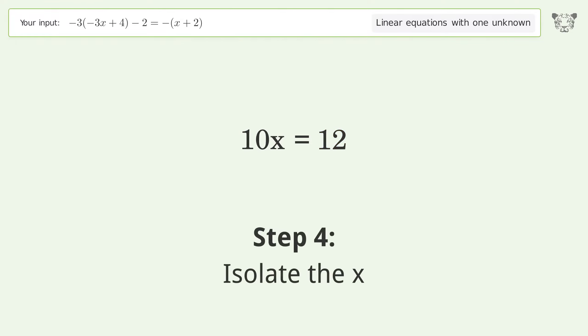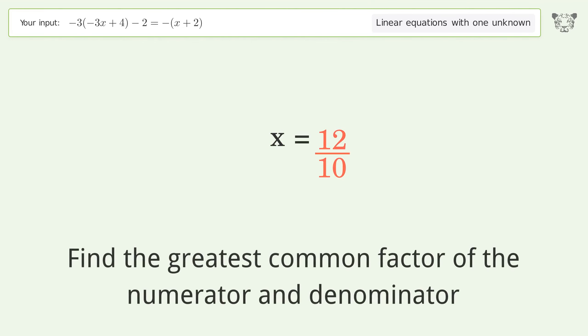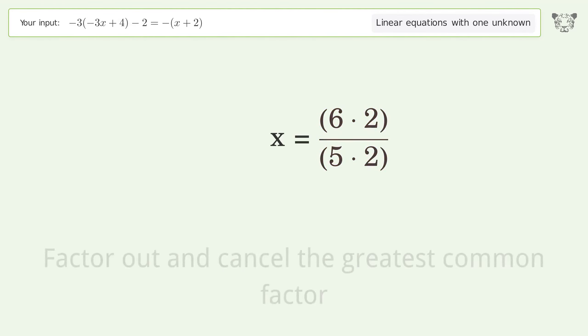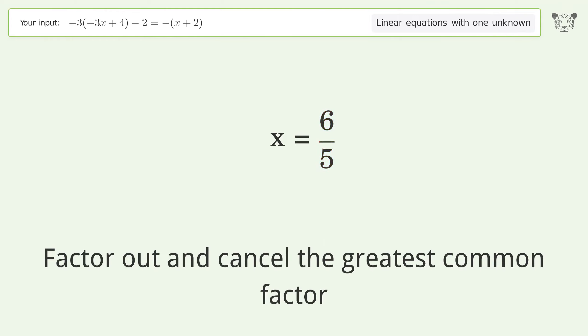Isolate the x. Divide both sides by 10. Simplify the fraction. Find the greatest common factor of the numerator and denominator. Factor out and cancel the greatest common factor. And so the final result is x equals 6 over 5.